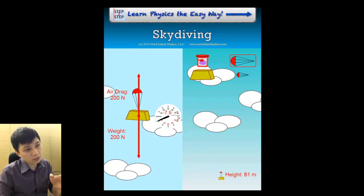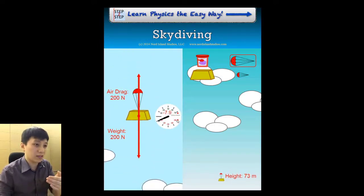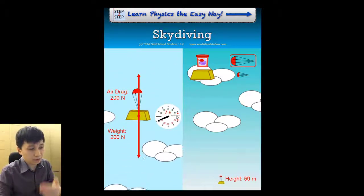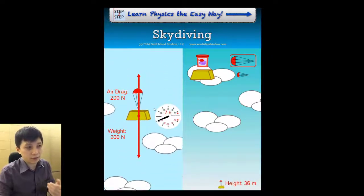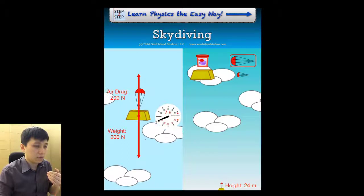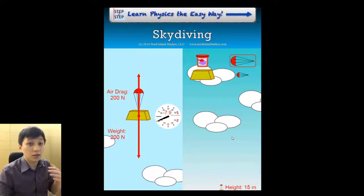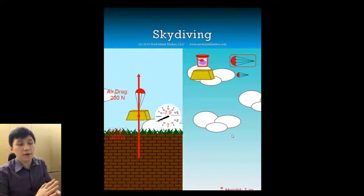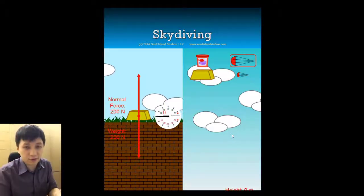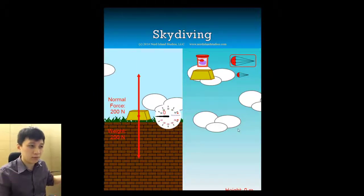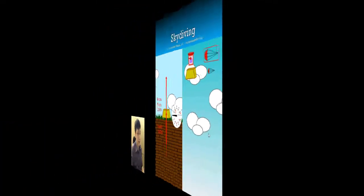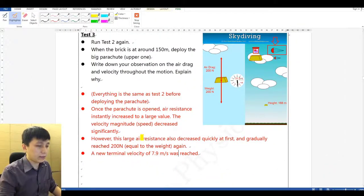For the speed: it was 31.6 and then quickly decreased until it reached a new constant value of negative 7.9 meters per second — a much slower speed. That's why people who go skydiving need a parachute; otherwise you'd be dead when you hit the ground. At 7.9 meters per second it's still quite large, so you may want a better parachute.